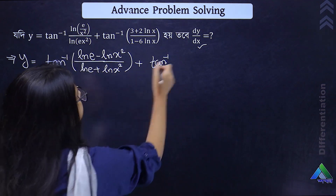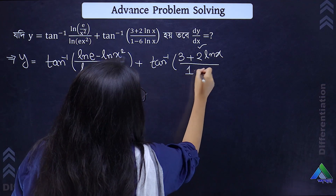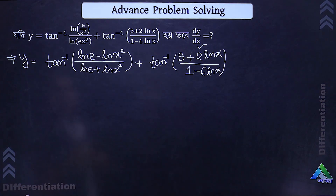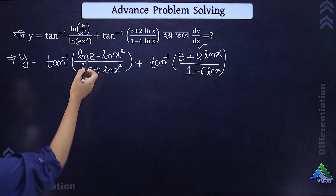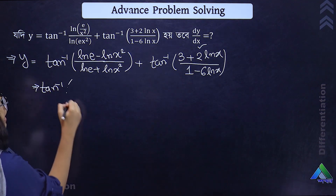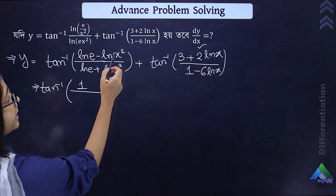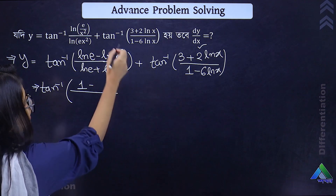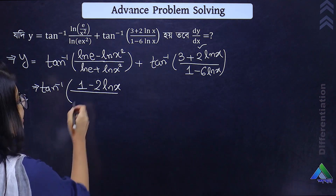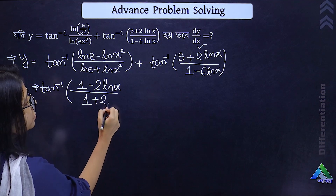So the first term becomes tan inverse of (1 minus 2 ln x) divided by (1 plus 2 ln x). The second term is tan inverse of (3 plus 2 ln x) divided by (1 minus 6 ln x). We can recognize these as standard tan inverse combination forms.